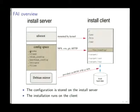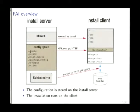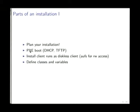Then we have a config space — just a subdirectory with certain files where all the configuration information for all install clients is stored. You have one config space for all your clients. And we need access to a package mirror. How does it work? Normally we start with the plan — very important. Then the normal DHCP, TFTP, diskless client setup.